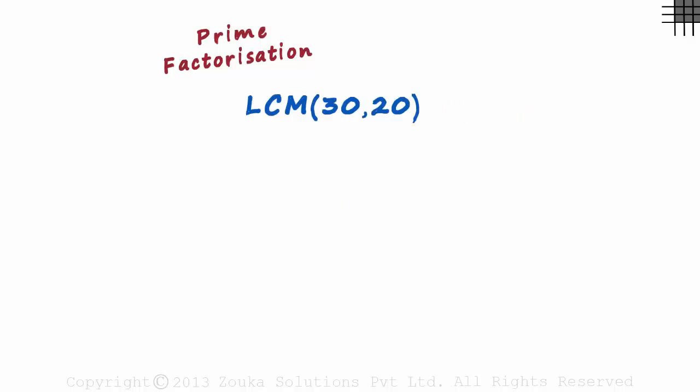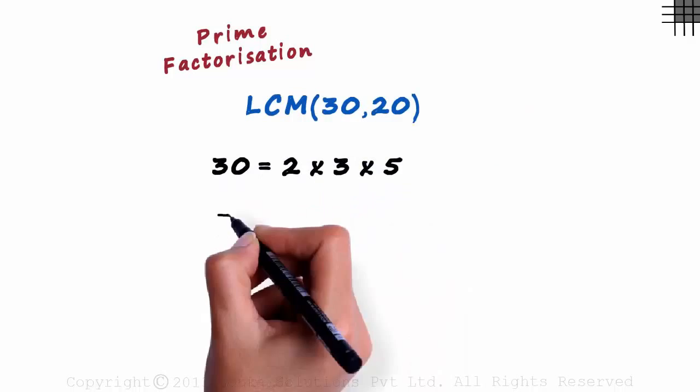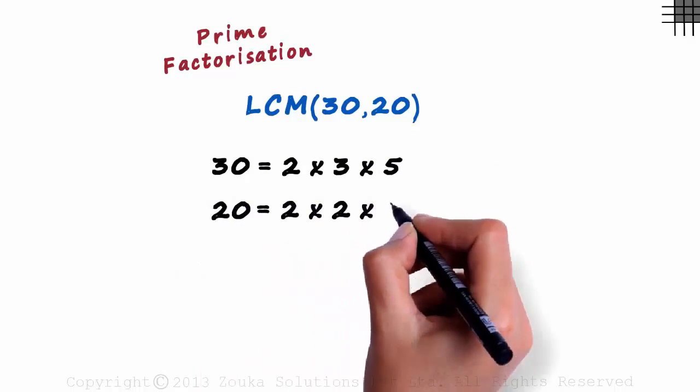30 can be written as 2 times 3 times 5 and 20 can be written as 2 times 2 times 5.